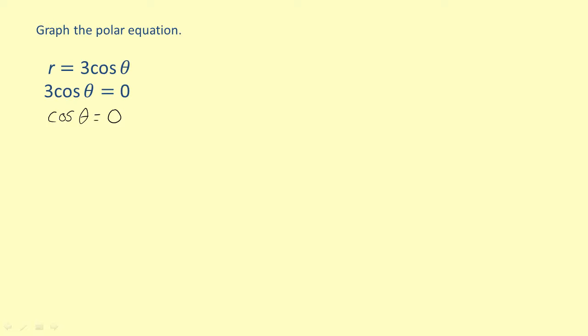To find the values of theta that make the cosine of theta equal zero, apply the inverse cosine function to both sides of the equation. This isolates theta so that you can solve.